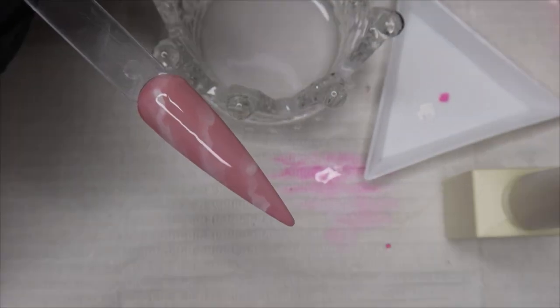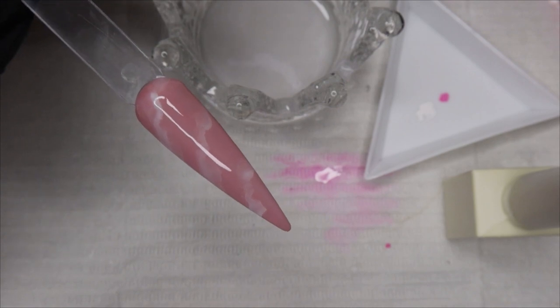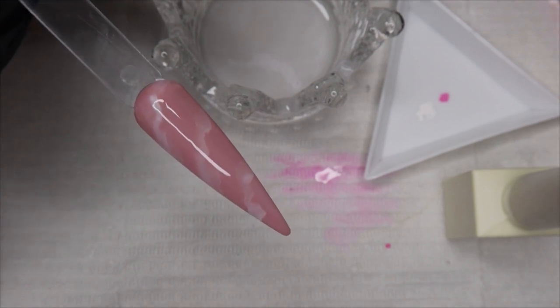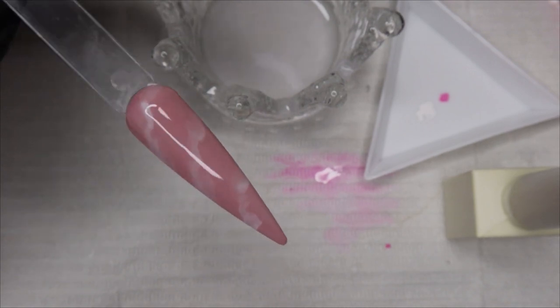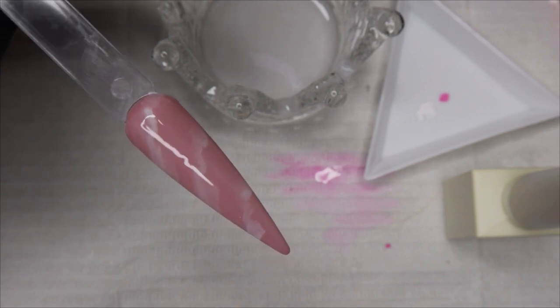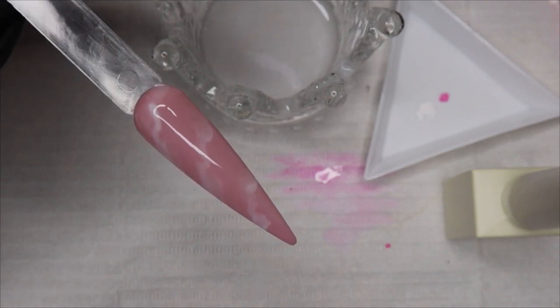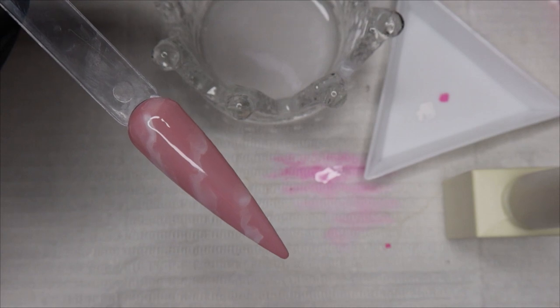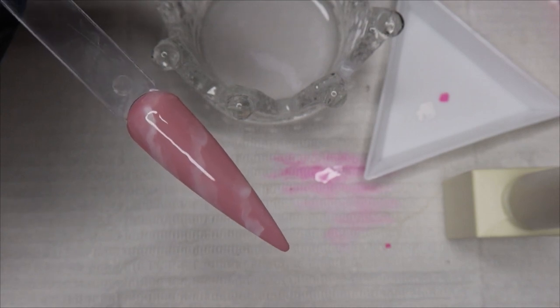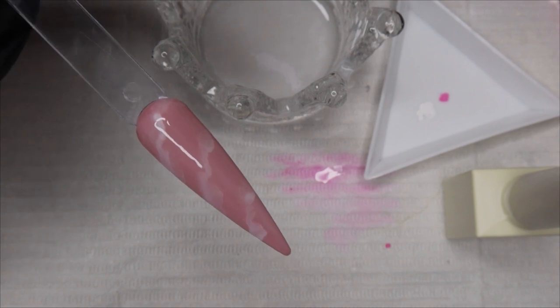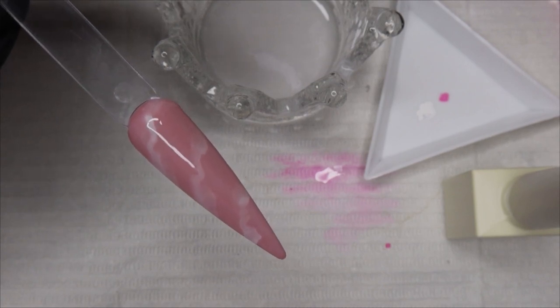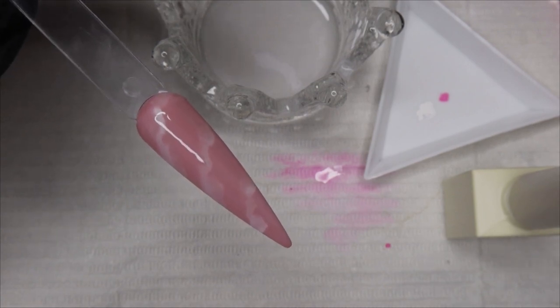So this is how it's looking after I applied the thin layer of that milky white top coat. You can still see the white underneath it, which is great. It seems like with rose quartz nails, jade nails, those stone types of nail designs, the layering is kind of what makes it look realistic.